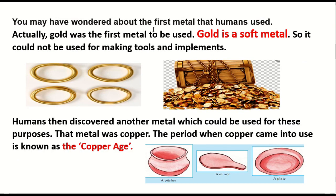You may have wondered about the first metal that humans used. Actually, gold was the first metal to be used. Gold is a soft metal, so it couldn't be used for making tools and implements. Humans then discovered another metal which could be used for this purpose, and that metal was copper, because copper is harder than gold.